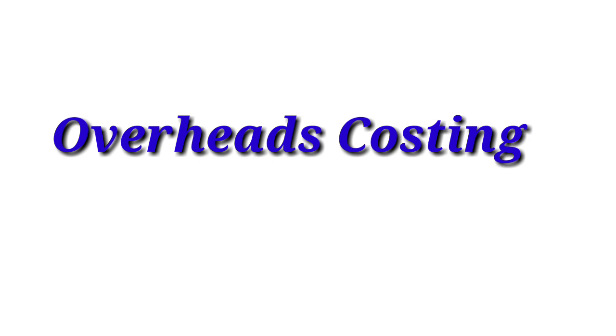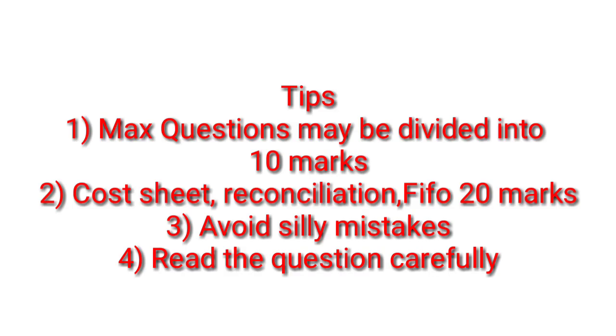Next is overheads costing. I have uploaded a detailed video — check it if you haven't seen it. Overheads costing carries 15 marks and the examiner can ask 20 or 10 marks. You will be asked about primary distribution of overheads across departments. The most important point for this chapter is: direct wages and direct materials are written only in the production department, not in the service department.